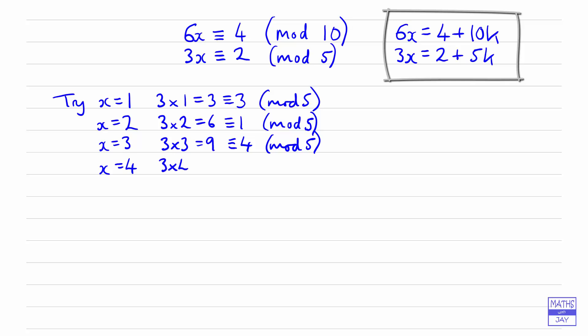3 times 4, that's 12. So in mod 5, that is what we want. So we now have that 3 times something is congruent to 2 mod 5. In other words, our solution is that x is congruent to 4 mod 5.